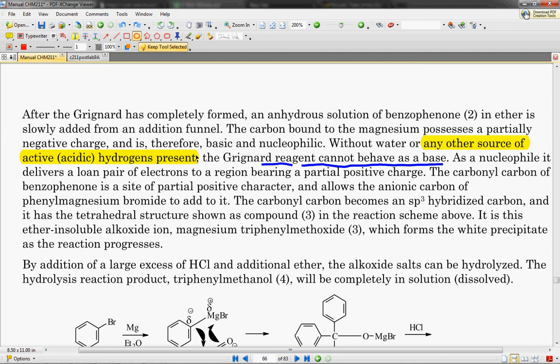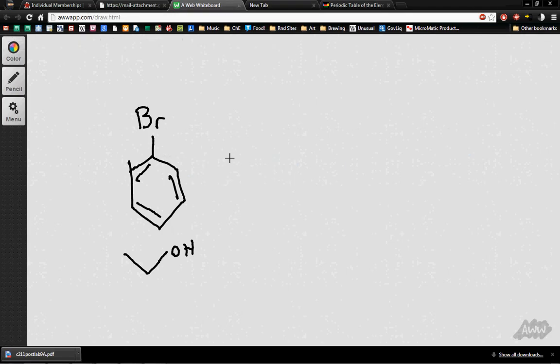it says, without water or any other source of active or acidic hydrogens. So we've got an acidic hydrogen, or this is about as acidic as water, a little less acidic. But so what's most likely going to happen is this bromobenzene is just going to turn into a boring benzene ring. And the ethanol will be left as its conjugate base. And that is how you do all of these problems.